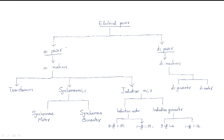AC power involves the power factor: P = VI cos φ. In DC power, there is no involvement of a power factor. The machines which work on AC electrical supply are called AC machines, and the machines which work on DC electrical supply are called DC machines.